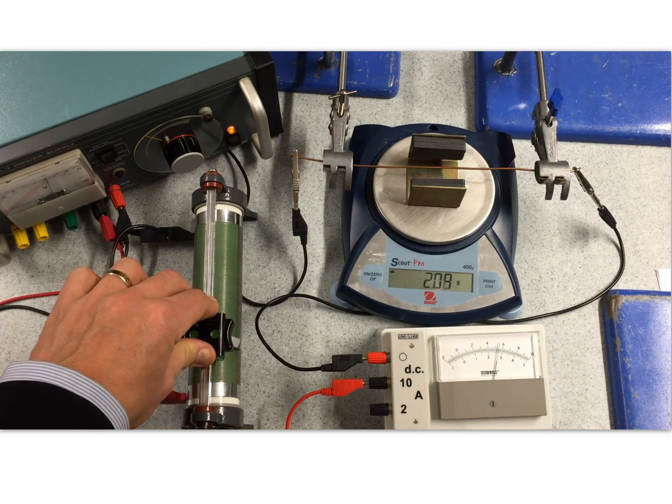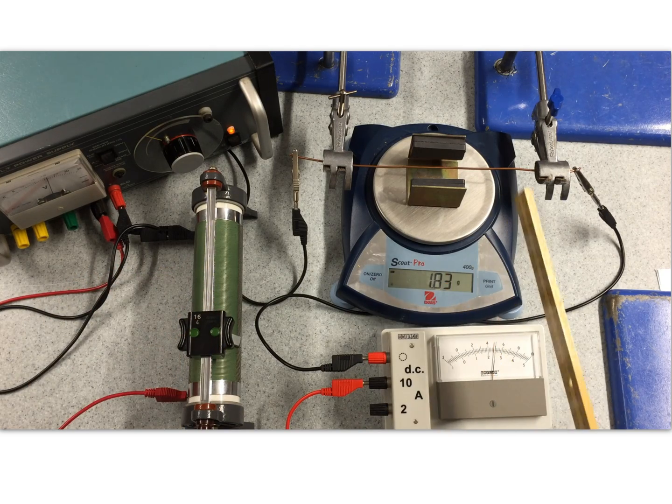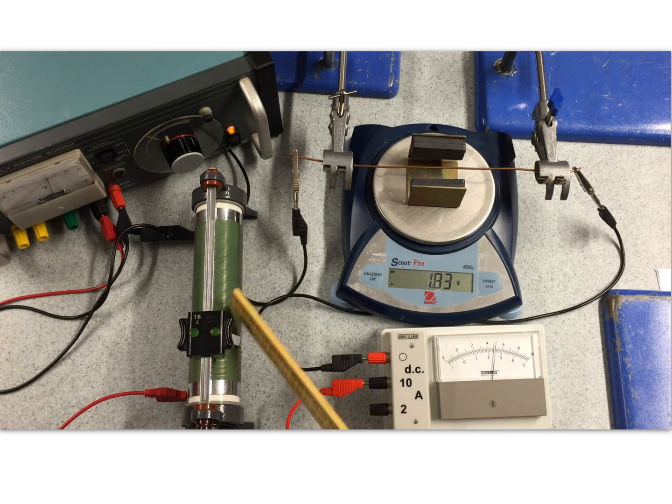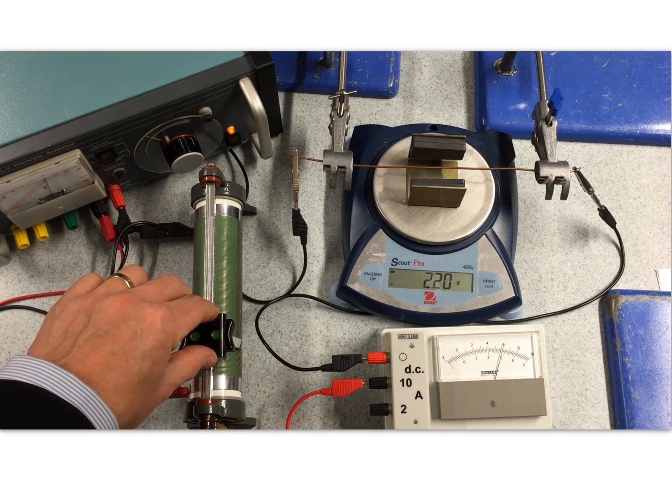And then to five. And when we're getting up to this range now, five amps is a lot of current flowing through. So, this will be heating up. This is going to be heating up. So, do these fairly rapidly. I'm going to do one at six.